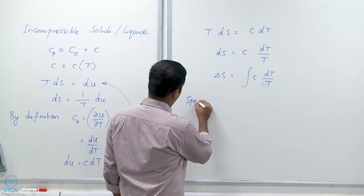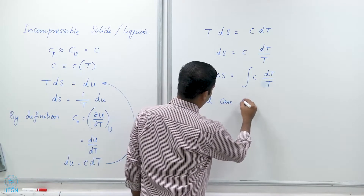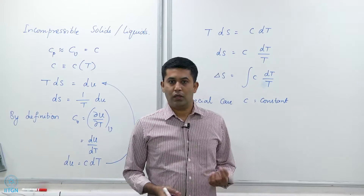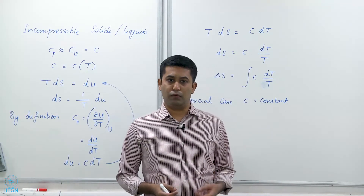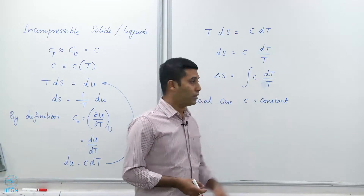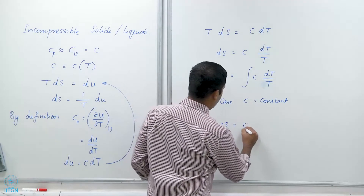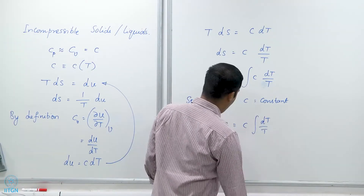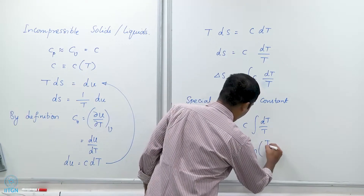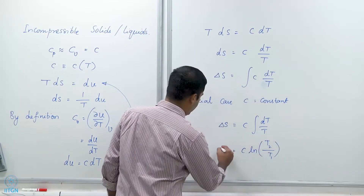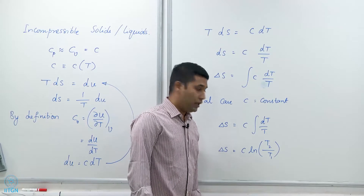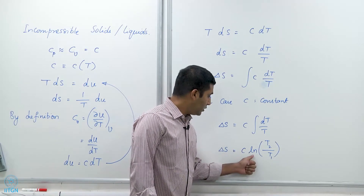As a special case, if c is a constant, or if it has a very weak dependence on temperature, I can take the average between the two temperatures and assume it remains more or less constant. Either way, I can pull c out of the integral and write delta S equals c times the integral of dT over T, which evaluates to c times the log of the final temperature divided by the initial temperature. So delta S for an incompressible solid or liquid undergoing a process is just c times the log of T2 over T1.